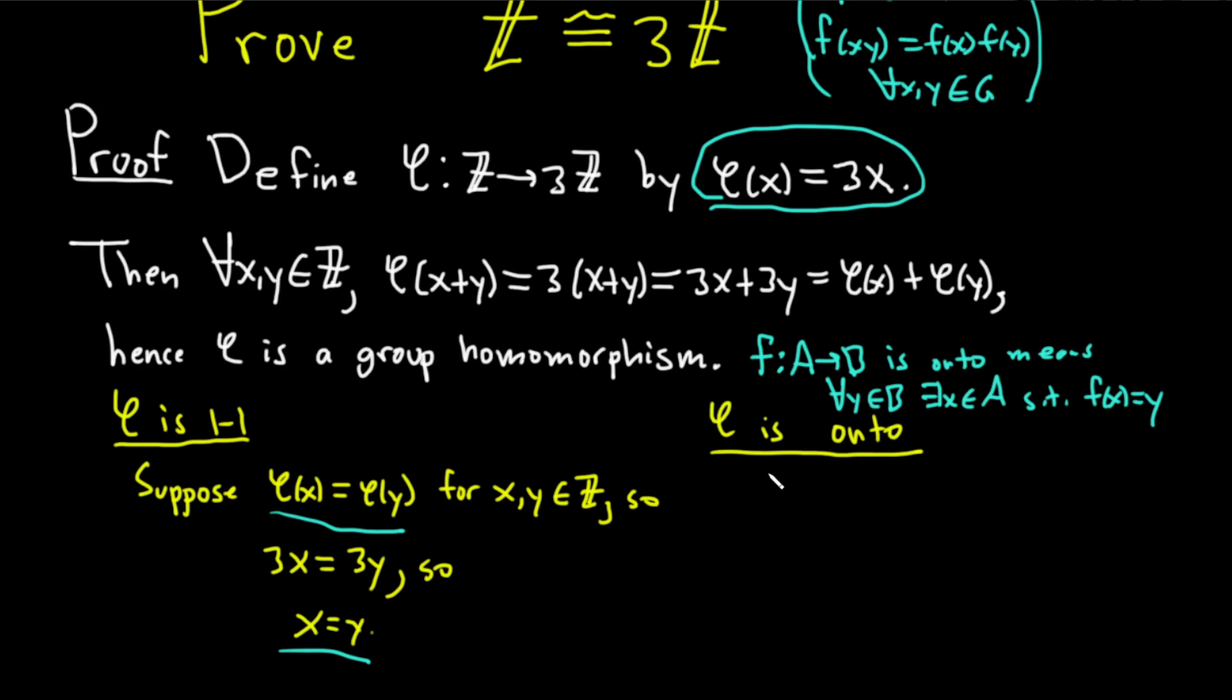We need to show that this function is onto. So given some y in b, this is just scratch work. If we have some y in b, some multiple of 3Z, say we have y equals 3m, we need an x value that will take us there. We need x such that phi of x equals y equals 3m. Well, phi of x is 3x, so we just take x equal to m in our proof.